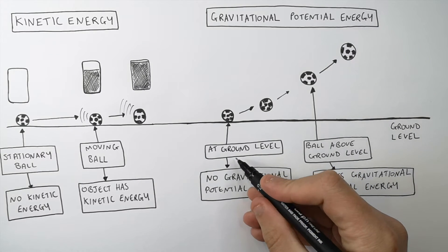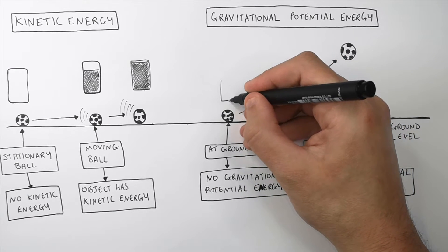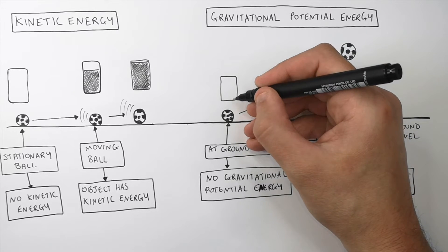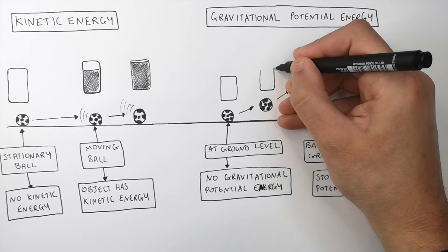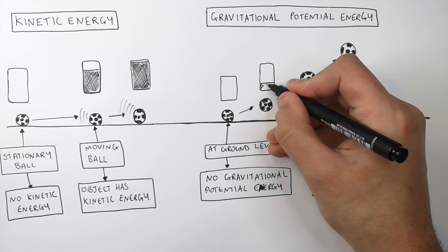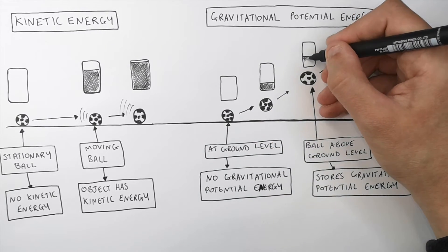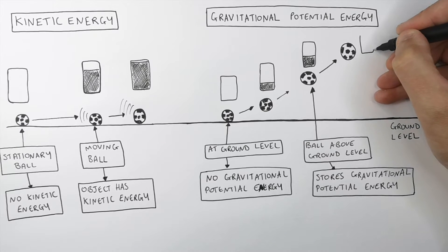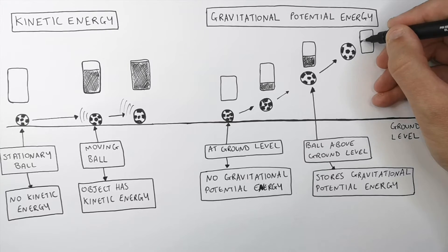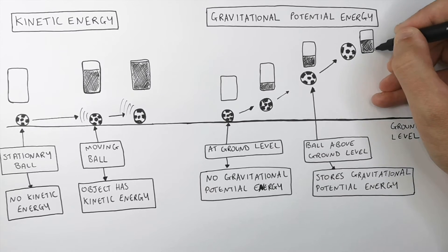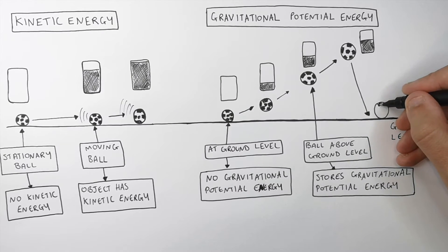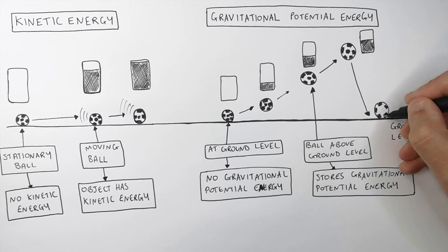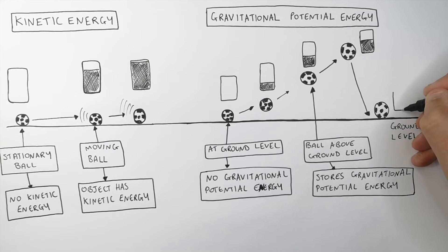When it comes to gravitational potential energy, because this ball here is at ground level, it has no energy in its gravitational potential energy store. And as the ball goes higher and higher away from the ground — increasing its height — the energy in the ball's gravitational potential energy store is going to increase. When the ball falls back down to the ground, the energy stored in the gravitational potential energy of the ball is going to decrease, and once it's back at ground level, there will be no gravitational potential energy stored in the ball.